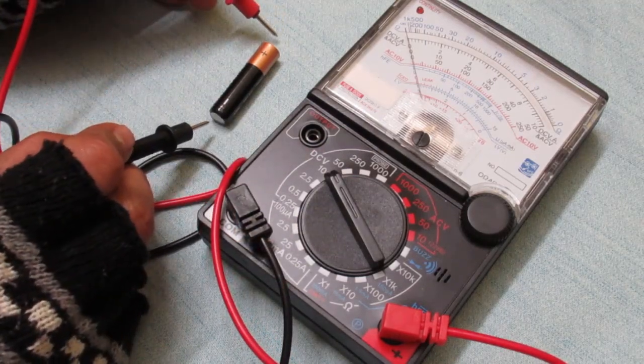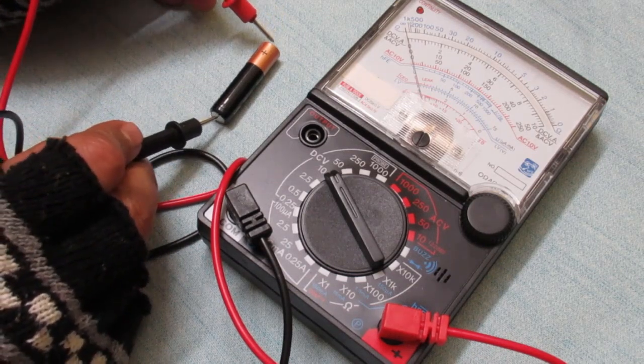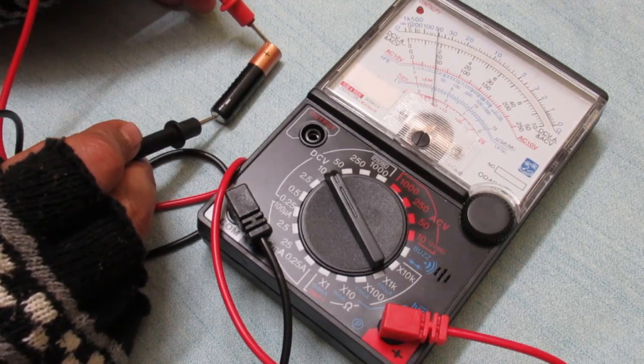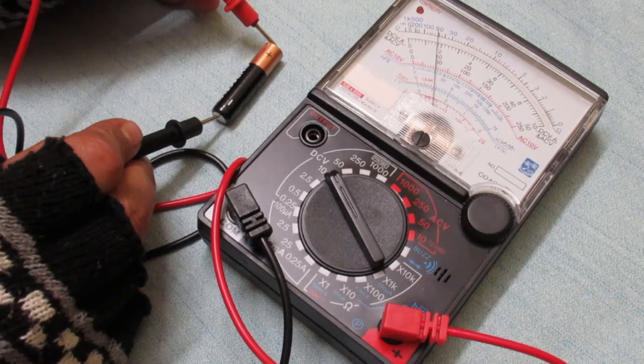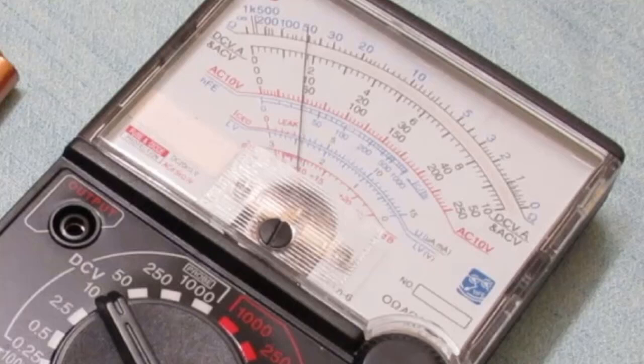Now touch the red probe to the positive terminal of the battery and the black probe to the negative terminal. The analog multimeter is showing approximately 1.7 volts DC.